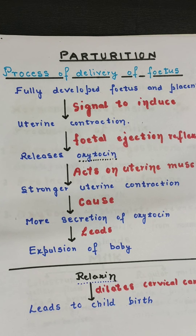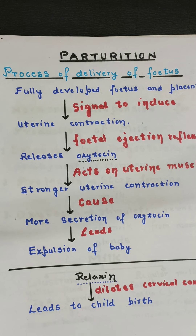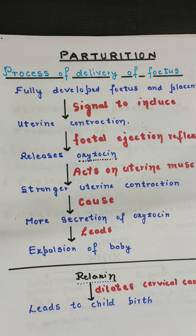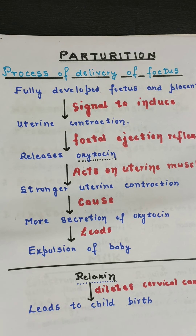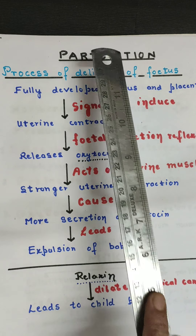Good morning children. Today we will study the last topic of the chapter: parturition and lactation. Parturition means to deliver a baby — 'parturition' means to be in labor. The child remains in the mother's womb for nine months plus or minus seven days, counted from the first day of the last menstrual cycle. This period is known as the gestation period. The ideal weight of the baby at the time of birth is about 3 kg. This parturition process is totally a hormonal process.